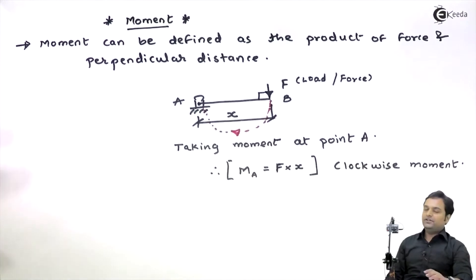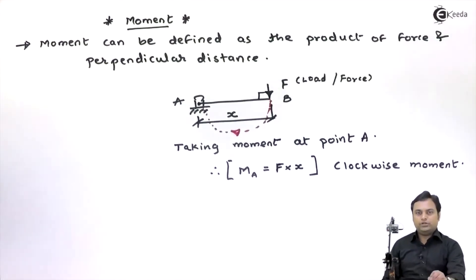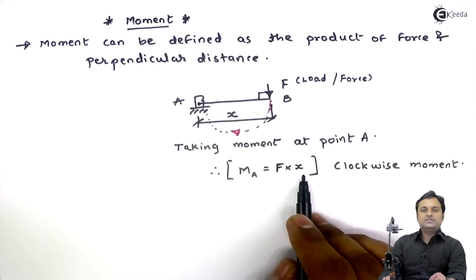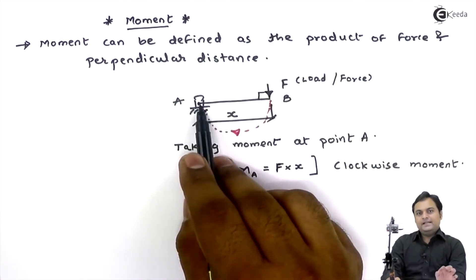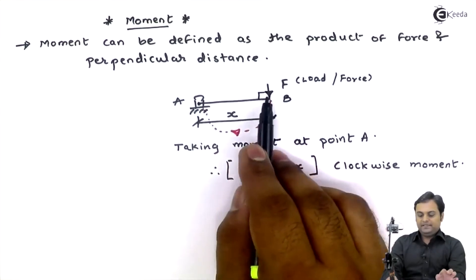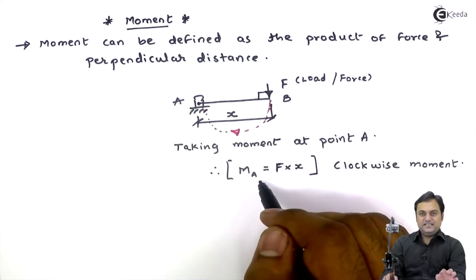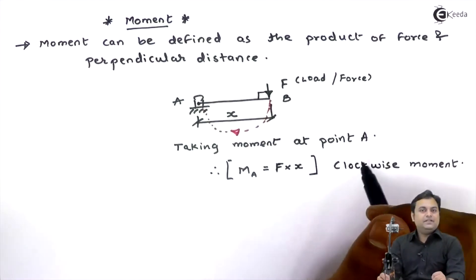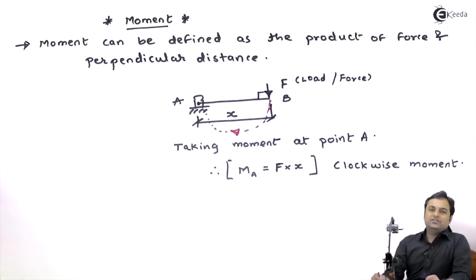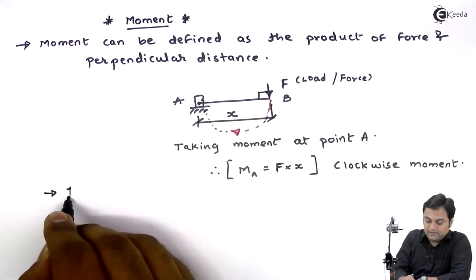The rotation is produced by the product of force and its perpendicular distance about the point where you want to take the moment. If I want to take the moment at point A, then M_A equals F into X. This moment can be in the clockwise direction or in the anticlockwise direction; here we have a clockwise moment.